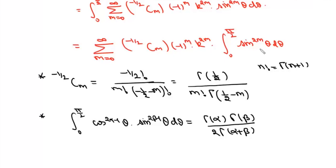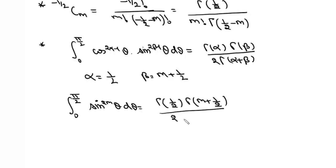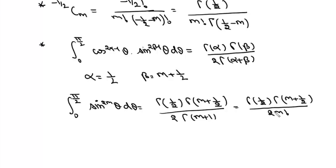To find the integral of sin^(2m)(theta), we replace alpha with 1/2 and beta with m plus 1/2. With alpha equal to 1/2, cos^0 equals 1, and we get sin^(2m)(theta) d-theta. So the integral from 0 to pi/2 of sin^(2m)(theta) d-theta equals Gamma(1/2) times Gamma(m plus 1/2) over 2 times Gamma(m+1), which equals Gamma(1/2) times Gamma(m plus 1/2) over 2 times factorial(m).